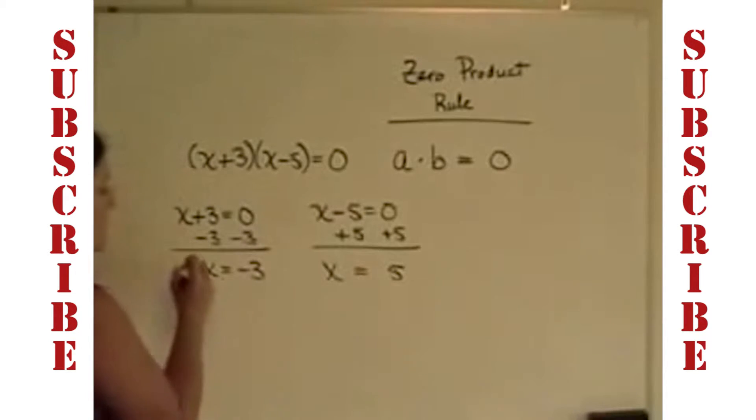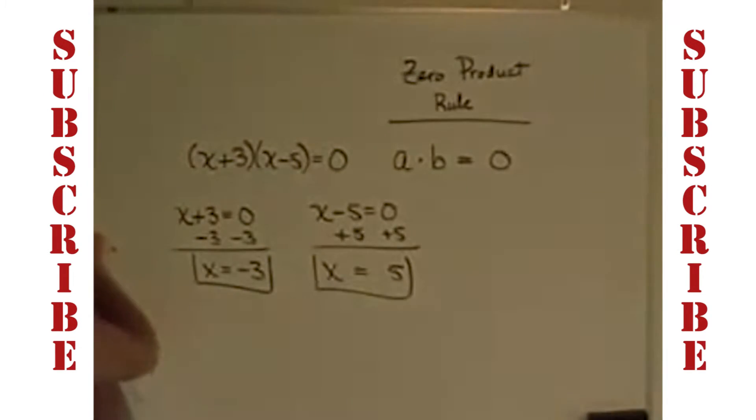These two answers, x equals negative 3 and x equals 5, are two solutions that work in this equation because of the zero product rule.